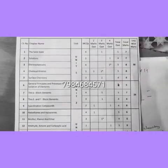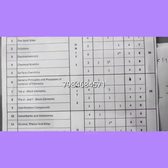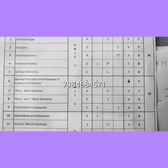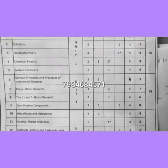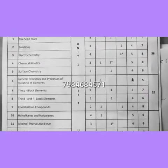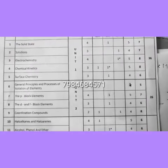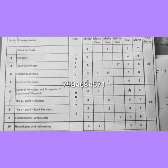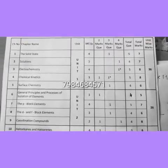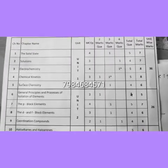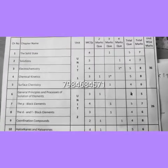In Unit 2, Chapter 6 — General Principles and Processes of Isolation of Elements — can have 3 MCQs and 1 two-mark question. The total number of questions will be 4 and the total weightage of the chapter is 5 marks.